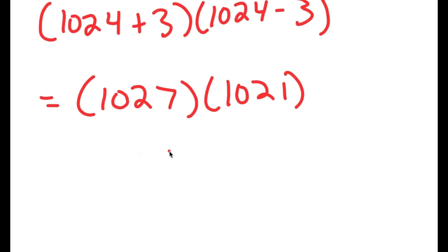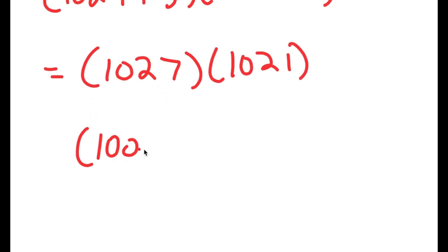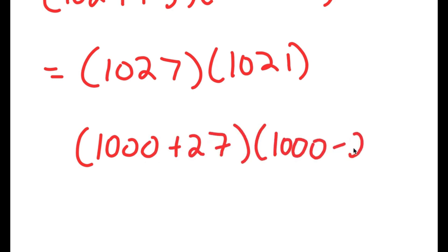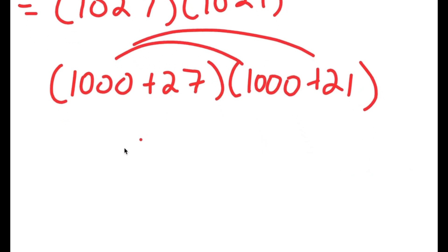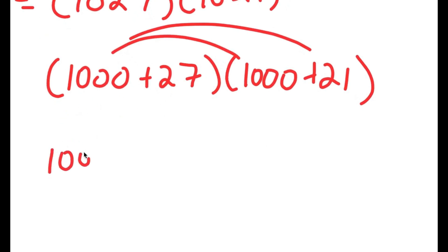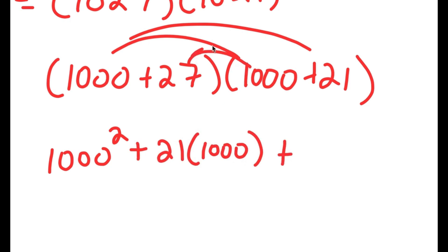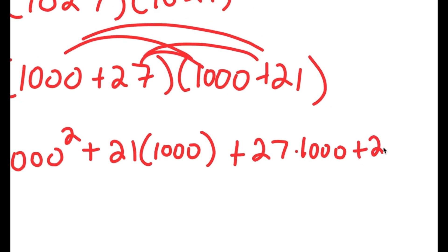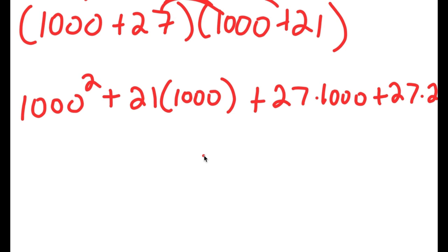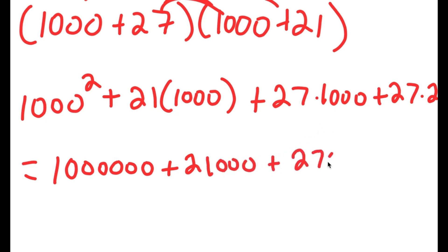We can multiply this directly, but there is a simpler way. I'm going to rewrite this as 1000 plus 27 times 1000 plus 21. Distributing: 1000 times 1000 is 1000 squared, plus 21 times 1000, plus 27 times 1000, plus 27 times 21. That gives 1,000,000, plus 21,000, plus 27,000, plus 567.